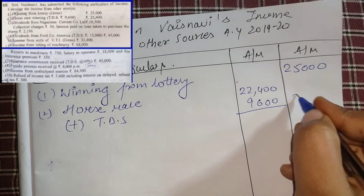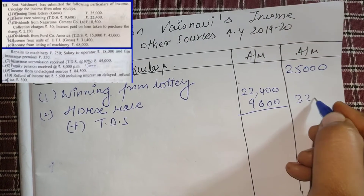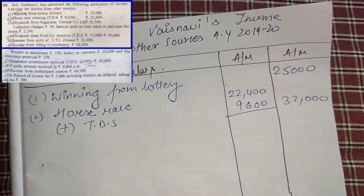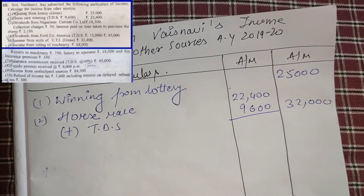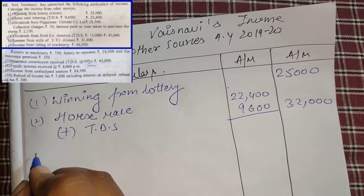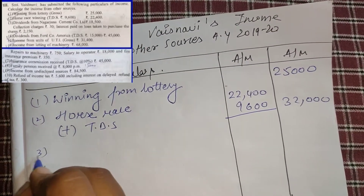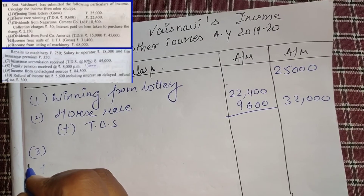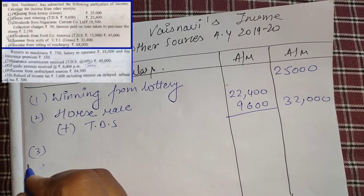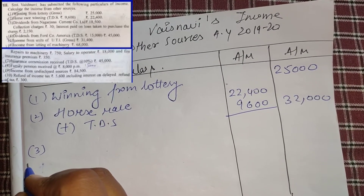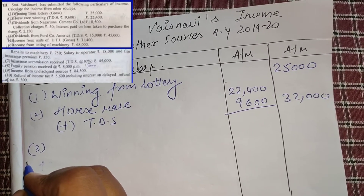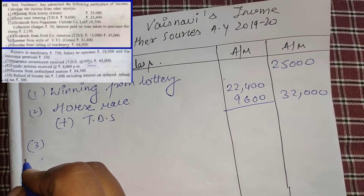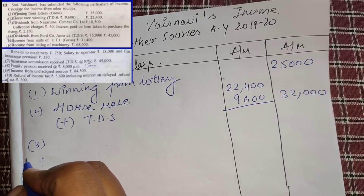Adding up gives us 32,000. Next we have dividend from Nagarjuna Cement Corporation Limited — this is an Indian company, so we will not gross it up; we will add it directly to other sources.